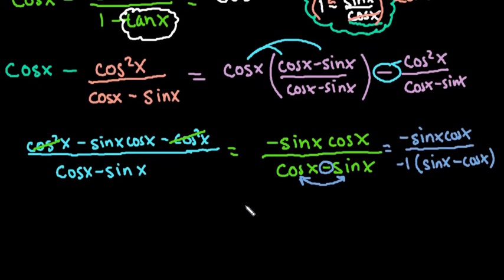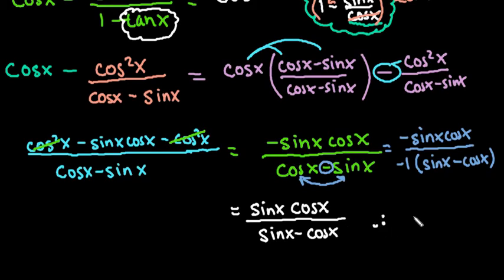So now if I simplify, a negative divided by a negative is a positive sine x cosine x over sine x minus cosine x, which is what we were trying to prove. So we can say, therefore, this is an identity.